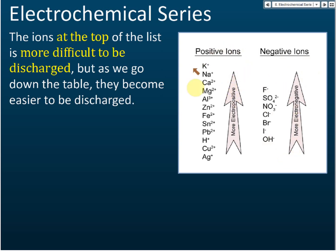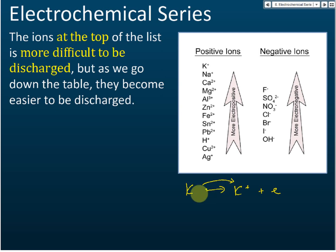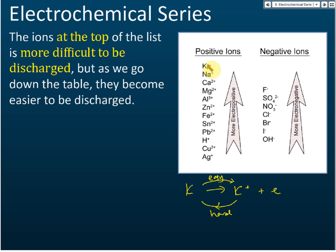For positive ions, the higher an ion is in the electrochemical series, the more electropositive it is. More electropositive means it is easier to form positive ions. For example, potassium — it is easy for potassium atoms to release electrons and become potassium ions. However, it is very hard for potassium ions to receive electrons and become potassium atoms again. So, higher in the series means easy to release electrons but difficult to receive electrons.